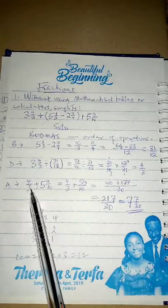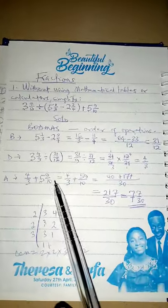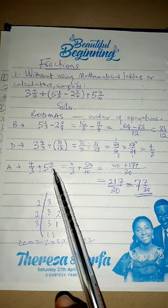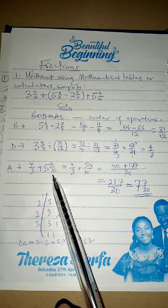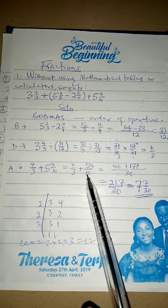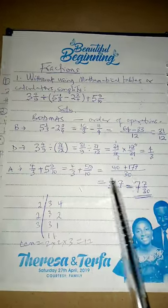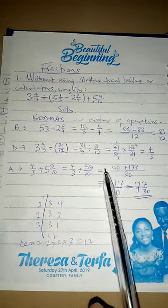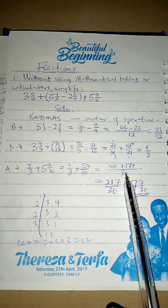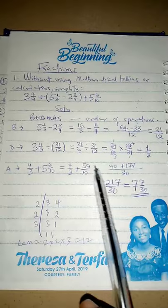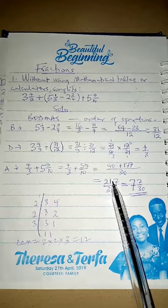You now have 4 over 3 plus five and nine-tenths. Convert five and nine-tenths to an improper fraction to get 59 over 10. The LCM of 3 and 10 is 30. Ten times 4 is 40; three times 59 is 177. So 177 plus 40 is 217 over 30.